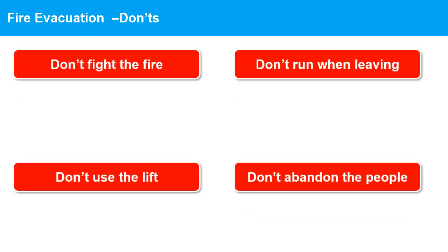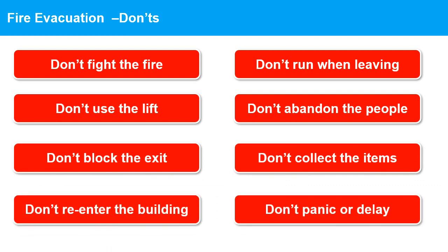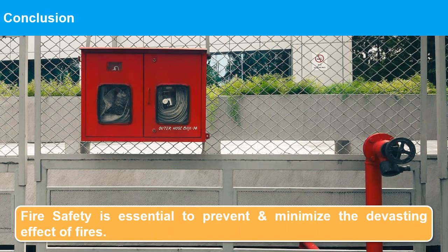What not to do during a fire evacuation: 1. Don't fight the fire. 2. Don't run when leaving. 3. Don't use a lift. 4. Don't abandon people. 5. Don't block the exit. 6. Don't collect items. 7. Don't return. 8. Don't panic or delay. In conclusion, fire safety is essential to prevent and minimize the devastating effects of fires. By being aware of potential hazards and taking preventive measures, we can ensure the safety of ourselves and those around us.